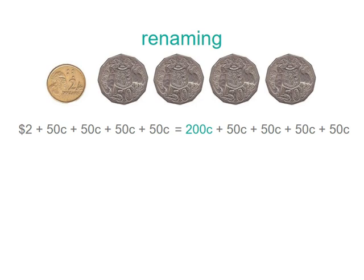On the left-hand side of our equal sign it's what we started with, and on the right-hand side the two dollars has now been renamed as two hundred cents. So we can add those up, and when we add them up — two hundred plus fifty plus fifty plus fifty plus fifty — we get four hundred cents.